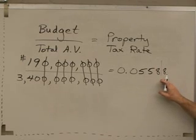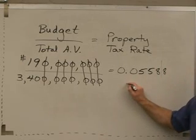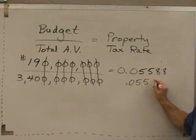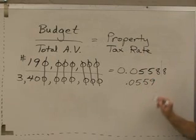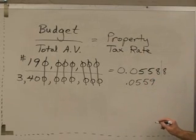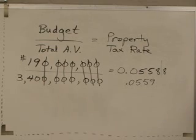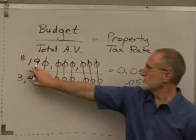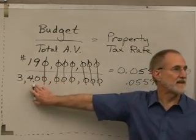Does that look right to everybody? A student says no. I've got 0.5588 — but no, that couldn't be right, that would be 50%. This is not half of that.